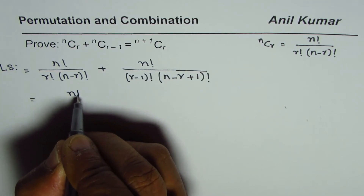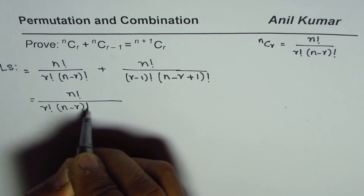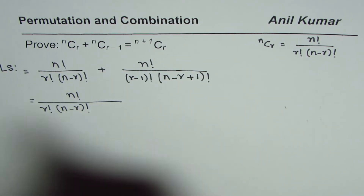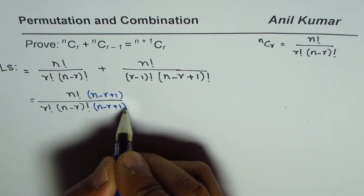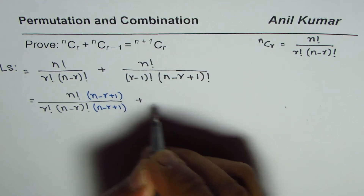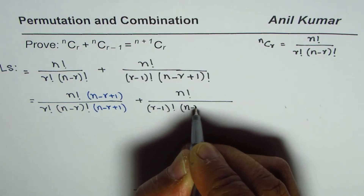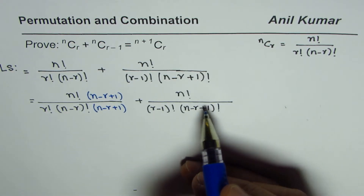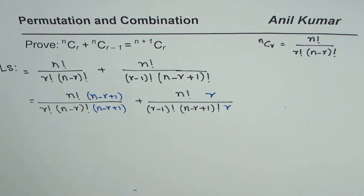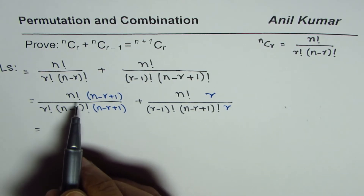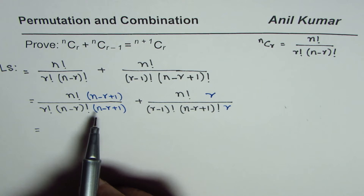So what we are going to do is take n factorial divided by r factorial times n minus r factorial and multiply it by n minus r plus 1 in the numerator and n minus r plus 1 in the denominator. For the other term, n factorial divided by r minus 1 factorial times n minus r plus 1 factorial, we multiply by r in the numerator and r in the denominator.